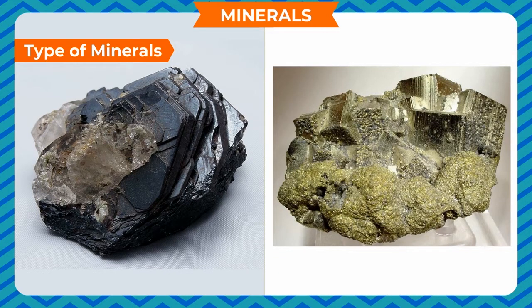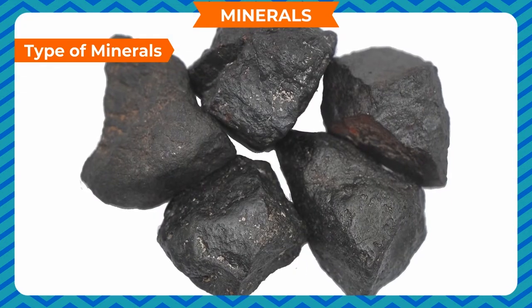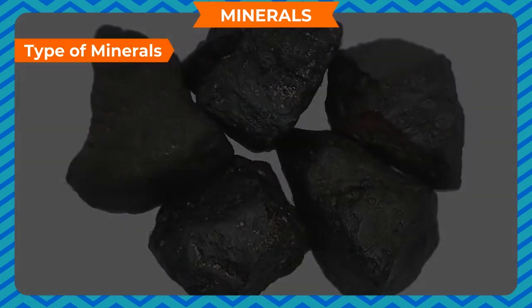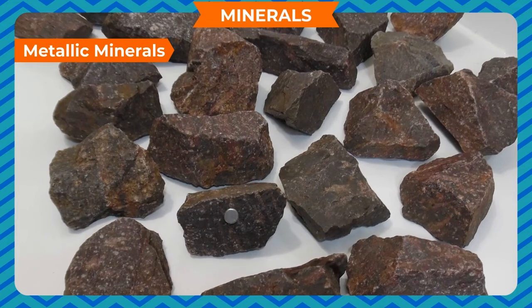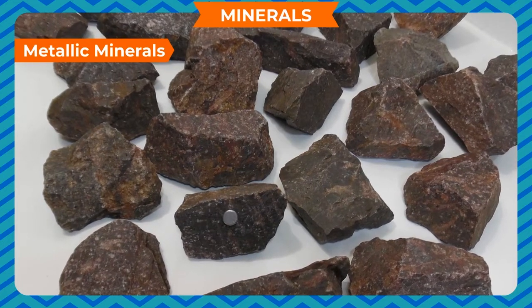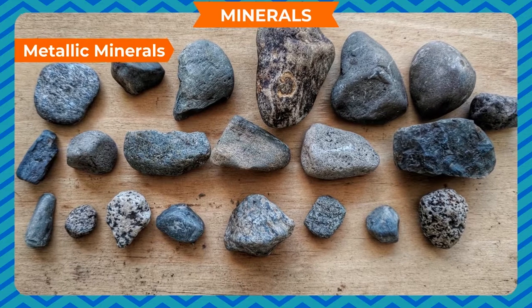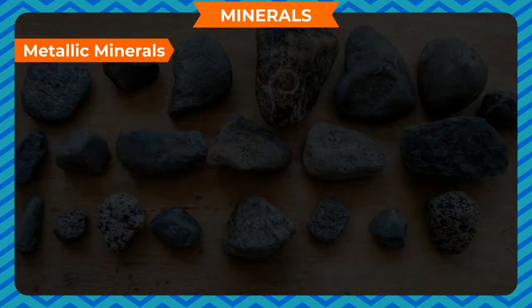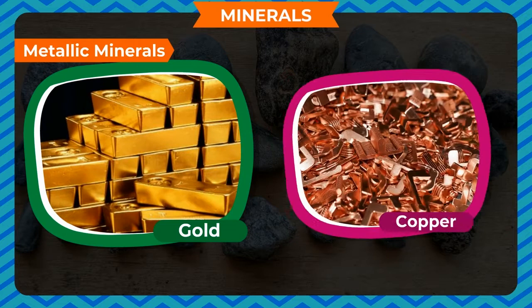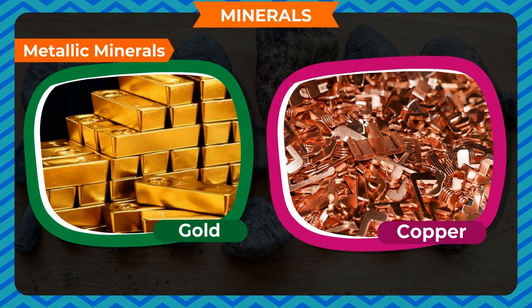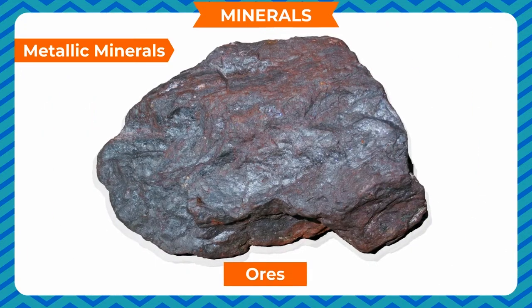Types of minerals. Minerals are broadly categorized into two types: metallic minerals and non-metallic minerals. Both have their own importance. We extract useful metals from metallic minerals, while substances such as coal and petroleum are extracted from non-metallic minerals. Metallic minerals are those from which we can extract useful metals. Examples include bauxite, hematite, magnetite, and cuprite. Metals like aluminium, iron, gold, and copper are obtained from their ores found in the Earth's crust.